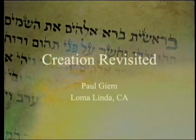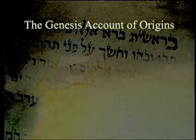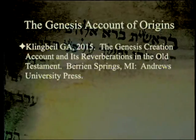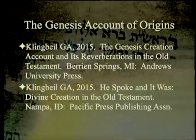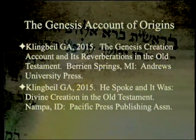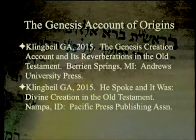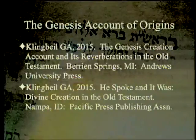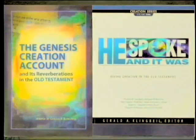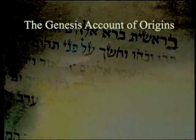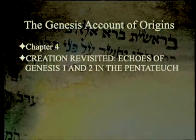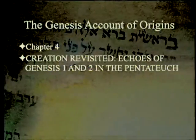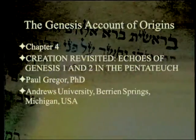We've been discussing the Genesis account of origins, the Genesis creation account and its reverberations in the Old Testament. Two books cover this topic: 'He Spoke and It Was' on divine creation in the Old Testament, and a popularized version of the first. We're going to be discussing Chapter 4, entitled 'Creation Revisited: Echoes of Genesis 1 and 2 in the Pentateuch,' by Paul Gregor, Ph.D. from Andrews University.